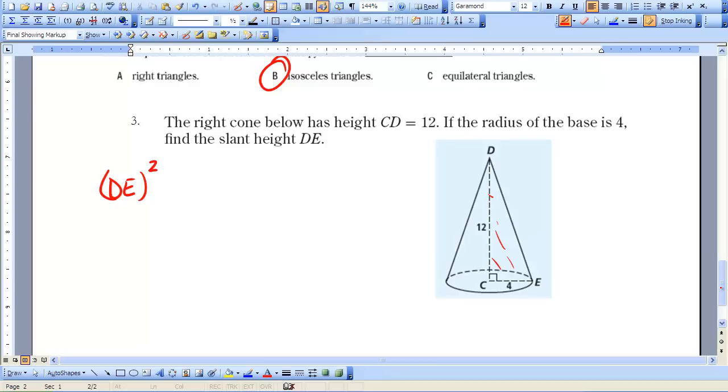DE squared is going to equal 4 squared plus 12 squared, so DE will equal the square root of 4 squared plus 12 squared, so DE then will equal 4 root 10.